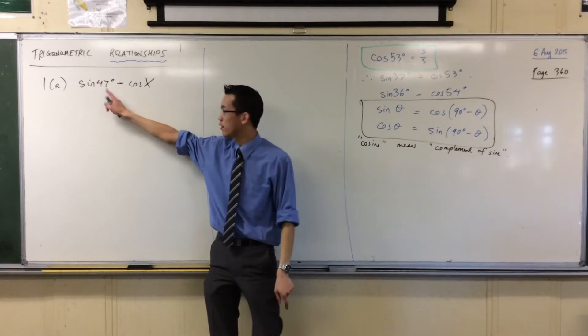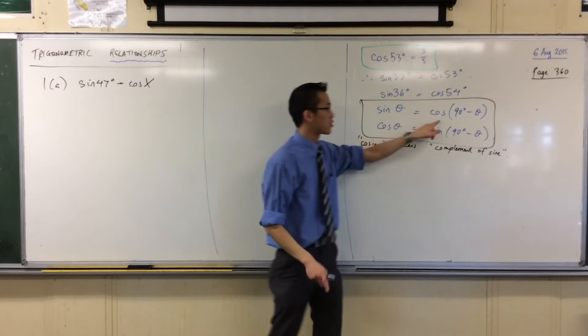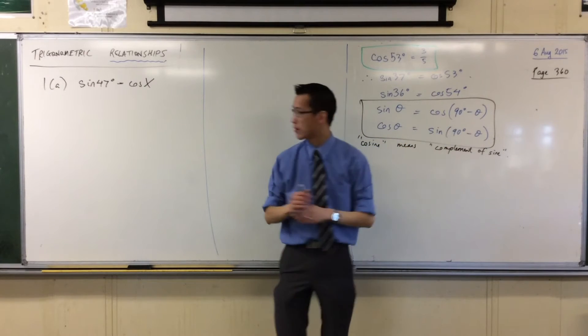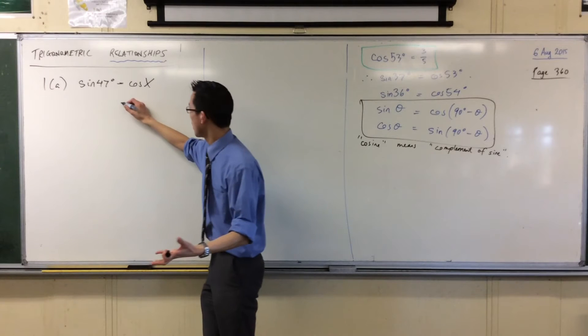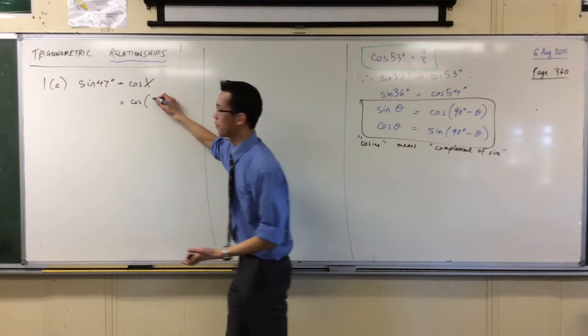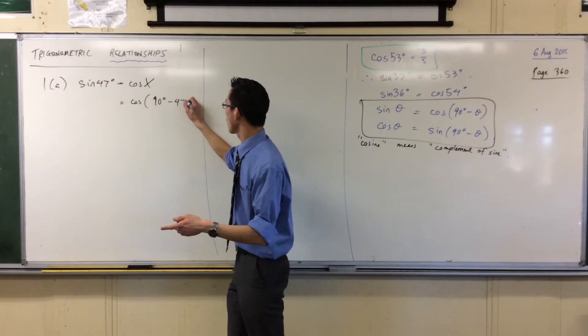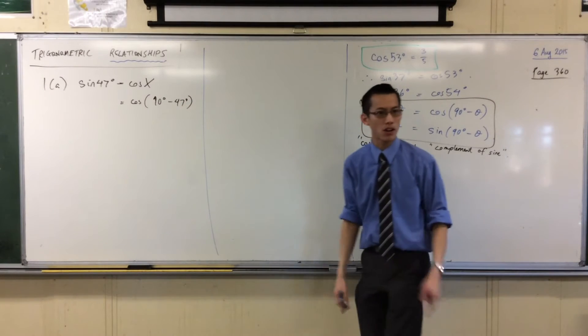So sine of some angle, there we go, there's my some angle, is cosine of some other related angle. So here's what I'm going to write. Sine of 47, that's my theta, is going to be cos of 90 minus 47. Good, the complement. 90 take away 47. There's my complement.